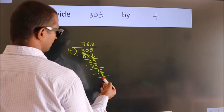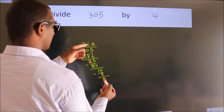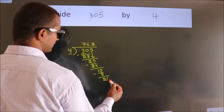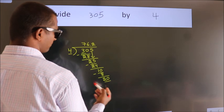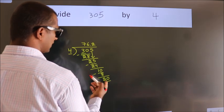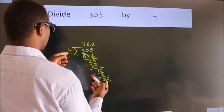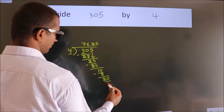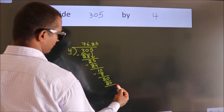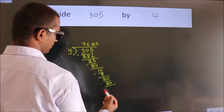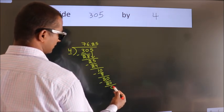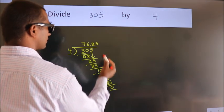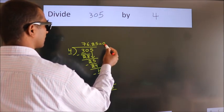After this, we already have the decimal, so directly take 0, giving us 20. In the 4 times table, 4 fives is 20. Now we subtract and we get 0. We got remainder 0, so this is our quotient.